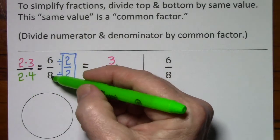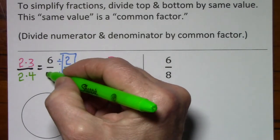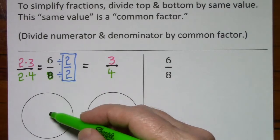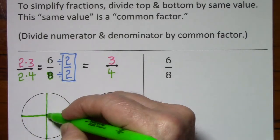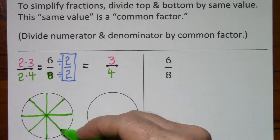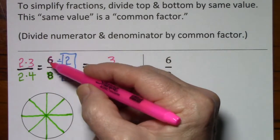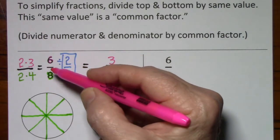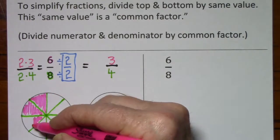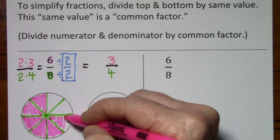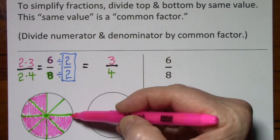If I want to represent 6 eighths with this circle, I first look at the denominator of 8. This tells me to divide my circle into eighths. Then I look at the numerator of 6, and this tells me to shade in 6 eighths. So I've represented 6 eighths with this circle.